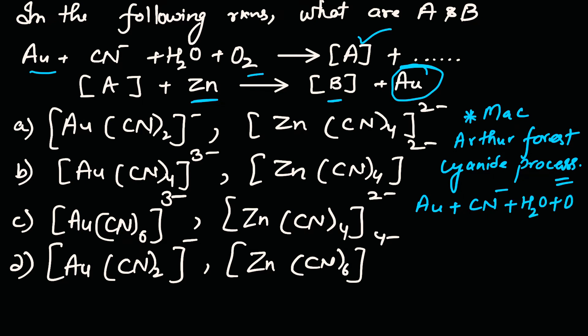We get a soluble complex of gold, [Au(CN)2]- plus OH-. This complex is soluble.